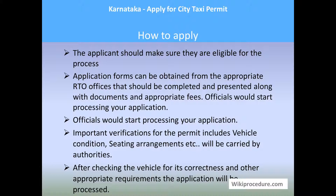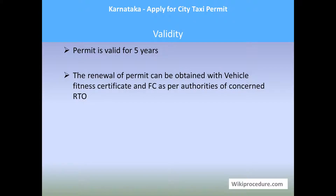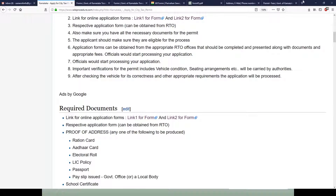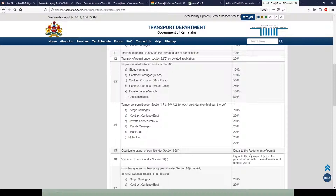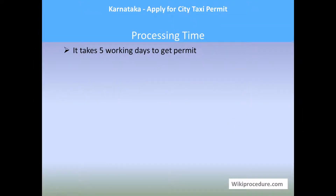After authorities inspect the vehicle for its correctness and other requirements, the application will be processed further to issue the city taxi permit. Eligibility: the owner of the vehicle is eligible to apply for a taxi permit. Validity: the permit is valid for five years, and renewal can be obtained along with a vehicle fitness certificate (FC) as per the concerned authorities. Fees: the RTO authorities will guide you on fees. A link is also provided to access fee information for the relevant service. Processing time: it takes five working days to receive the permit.